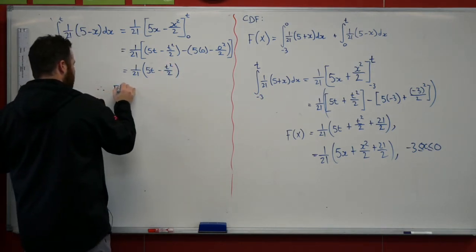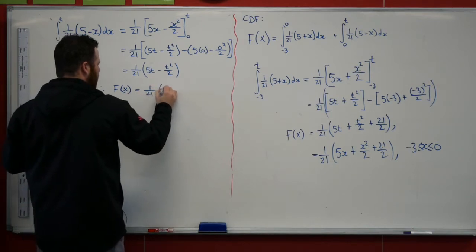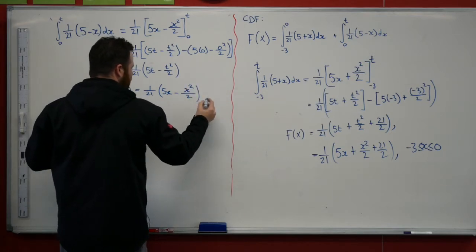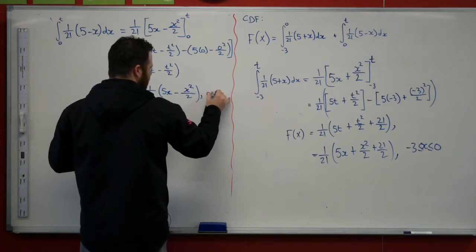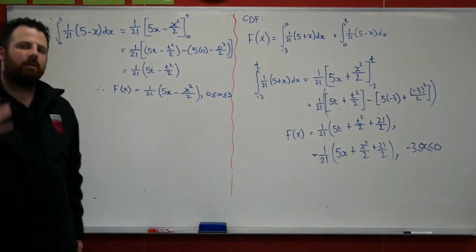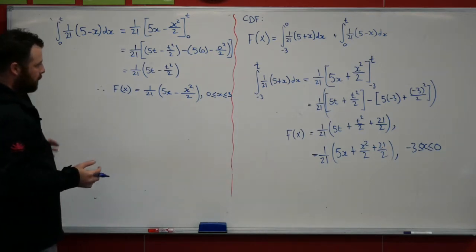Which equals 1 on 21 outside of 5t minus t squared over 2. So therefore, f of x in this section is just 1 on 21, 5x minus x squared over 2, for values of x that are between 0 and 3.